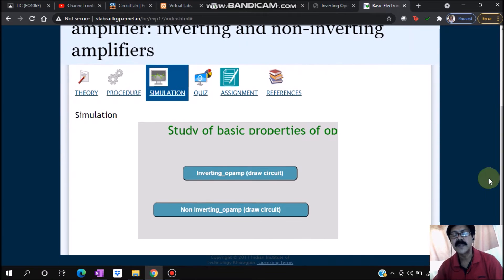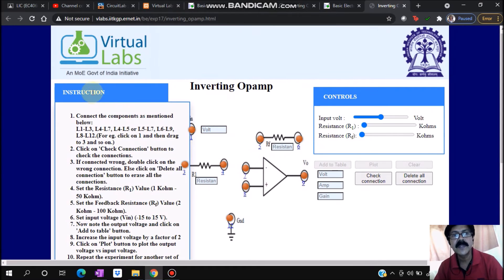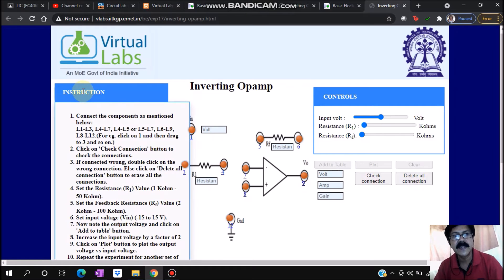In the simulation part, there are two experiments: inverting operational amplifier and non-inverting amplifier. Let's see the inverting operational amplifier. When I click this, we see there is an op-amp, resistor R1, resistor Rf, input voltage, and ground that we need to connect. An experimental table is shown along with some controls. You should also see the instructions on how it has to be connected.